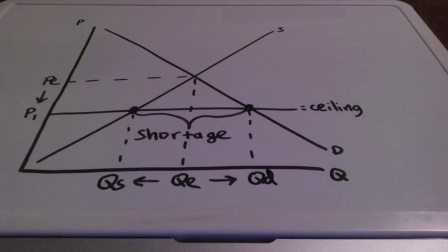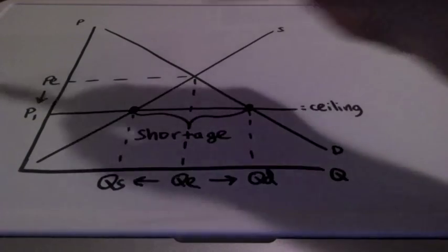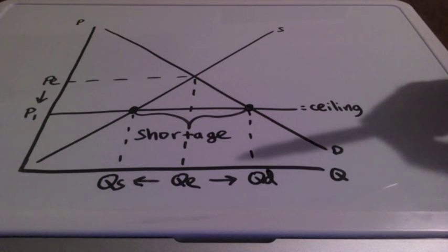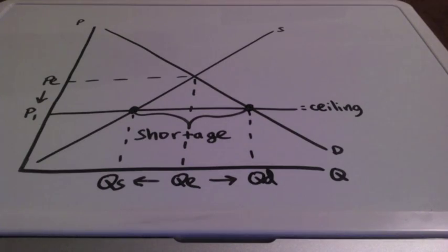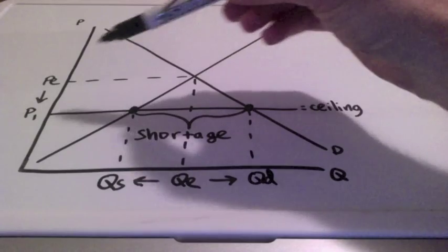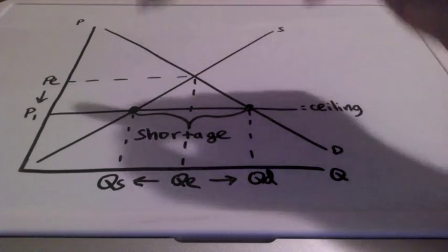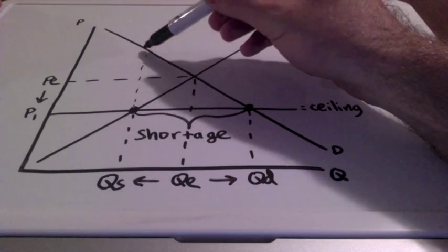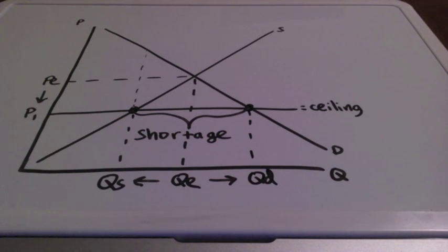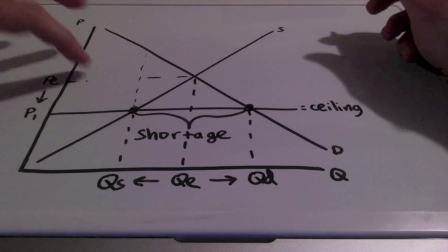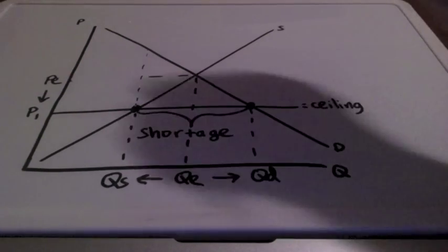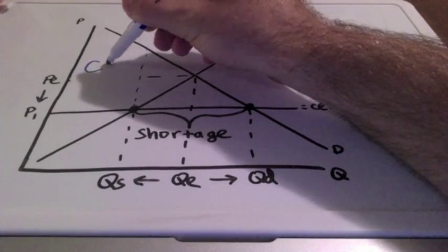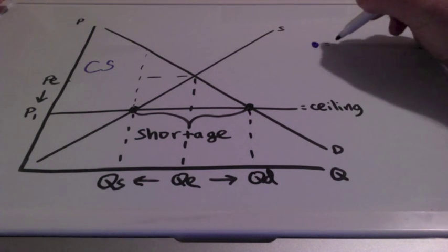Let's take a look at consumer and producer surplus when the government enacts a price control like a price ceiling. Remember, the theory behind a price ceiling is to keep prices low for consumers. We find our new price and we find our first plotted point, which is quantity supplied. We bring this point all the way to where it hits our demand curve, and this entire area in blue represents consumer surplus.